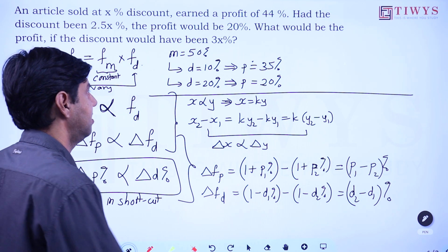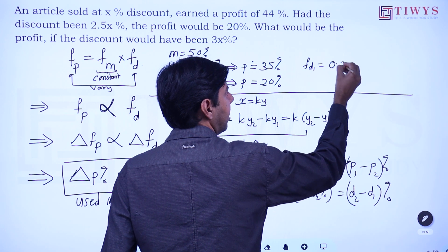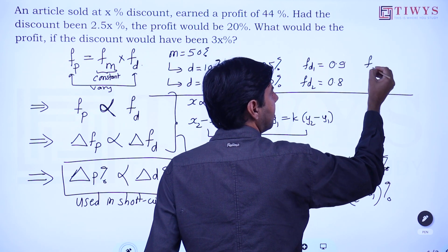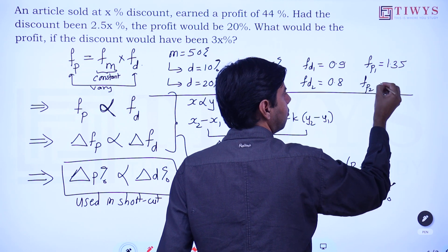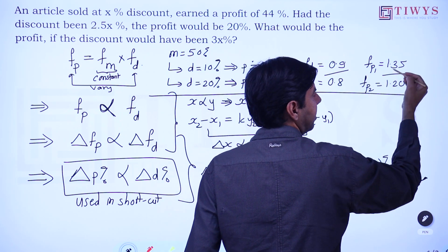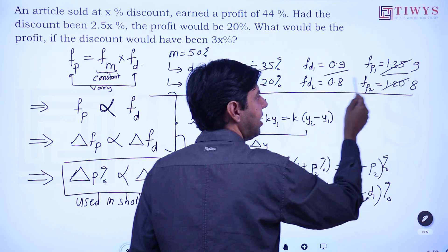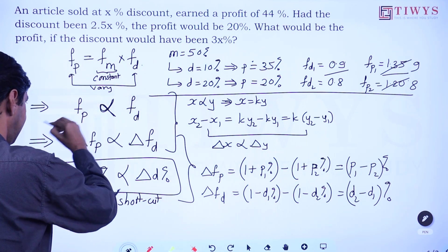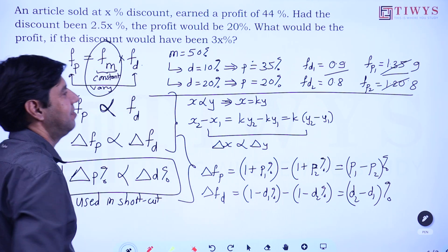Multiplying factor of discount 1 (10%) is 0.9; discount 2 (20%) is 0.8. Multiplying factor of profit 1 (35%) is 1.35; profit 2 (20%) is 1.20. The ratio 0.9 to 0.8 equals 9:8, and 1.35 to 1.20 equals 135:120 = 9:8. The ratios are the same, confirming that the multiplying factor of profit is indeed directly proportional to the multiplying factor of discount when markup remains constant.